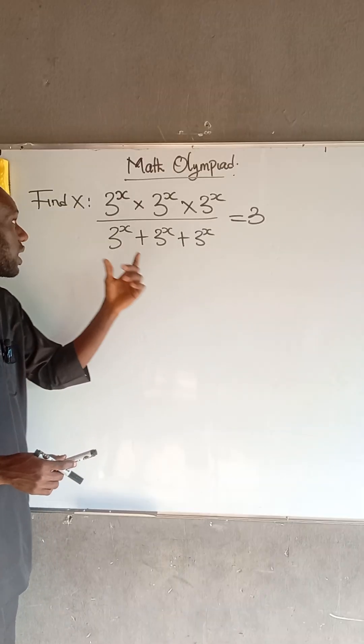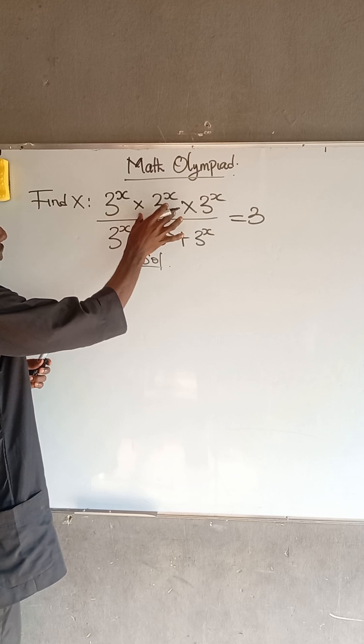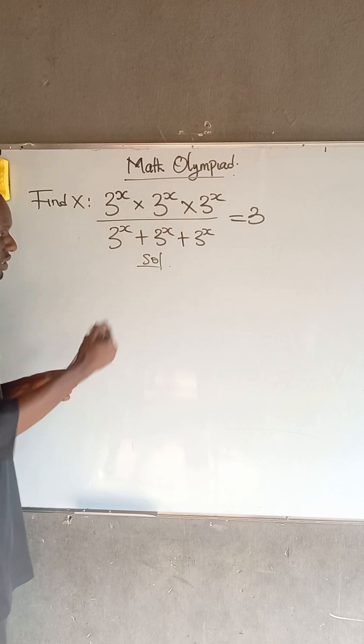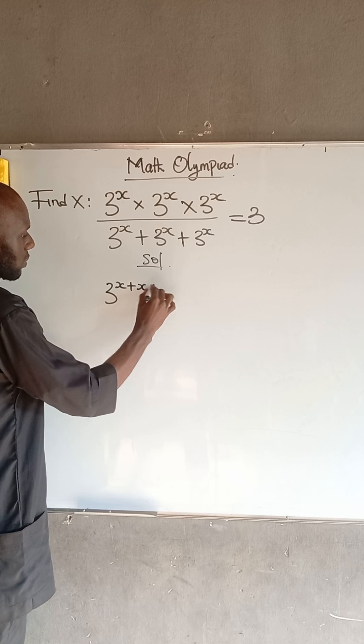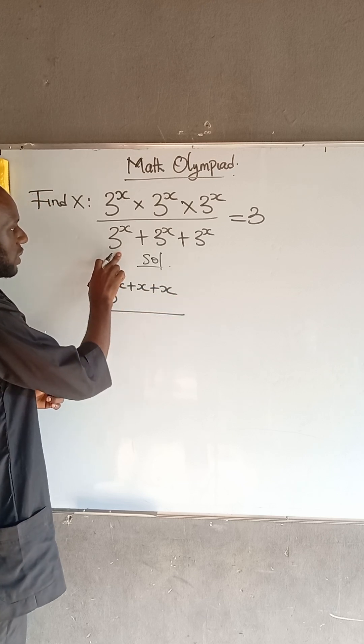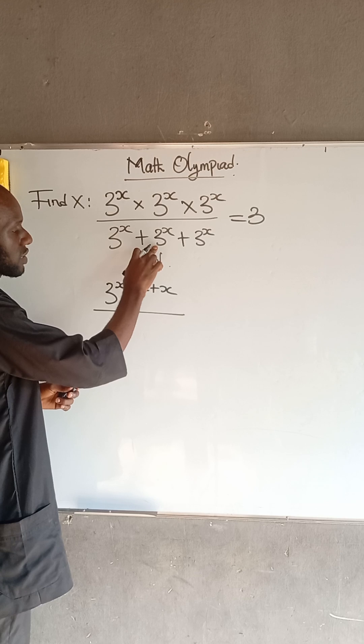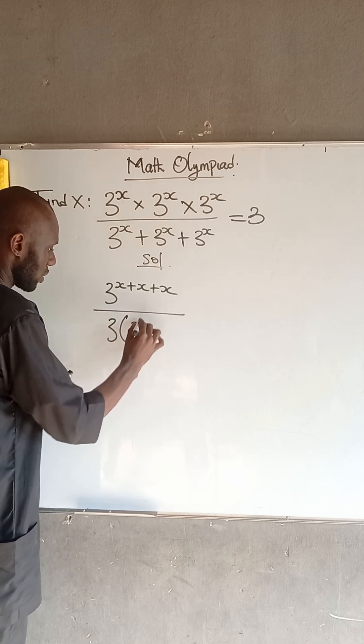Given this equation, we are asked to find the value of x. At the numerator, we apply the laws of indices, so this becomes 3 to the power of x plus x plus x. Divided by 3 to the power of x plus 3 to the power of x plus 3 to the power of x, which is equal to 3. We can rewrite this as 3 multiplied by 3 to the power of x.